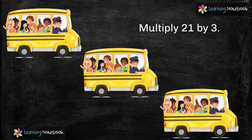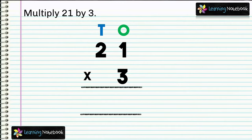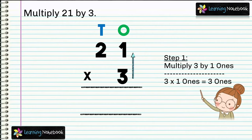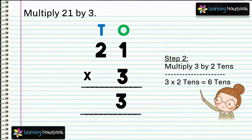In this particular case we will multiply 21 by 3. To multiply, first let's write the numbers in columns as shown. Now we will multiply in two steps. In step one, multiply 3 by 1 ones — 3 into 1 ones equals 3 ones — so we write 3 at the ones place in the answer.